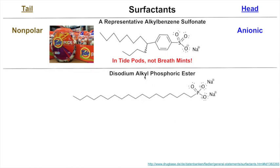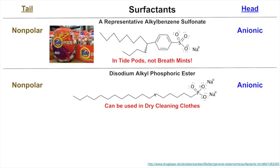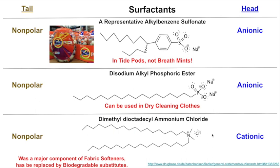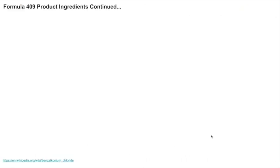Disodium alkyl phosphoric ester has a non-polar tail and an anionic head; it's used in dry cleaning. Dimethyl di-octyl ammonium chloride has two non-polar tails and a cationic head. It was a major component of fabric softeners but has been replaced with more biodegradable substitutes because it was slow to break down in nature.